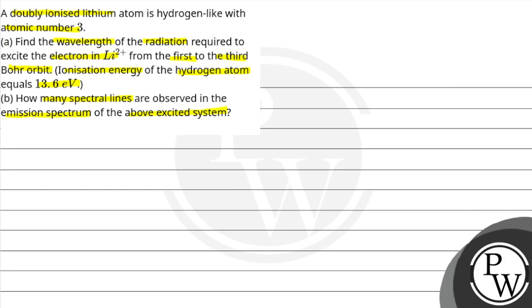इस question में हमारे पास doubly ionized lithium atom दिया है, जिसका atomic number 3 है। तो हम लोगों को radiation की wavelength find करनी है, जो कि हमारे atom को first state से third वाले state में लेके जाए।